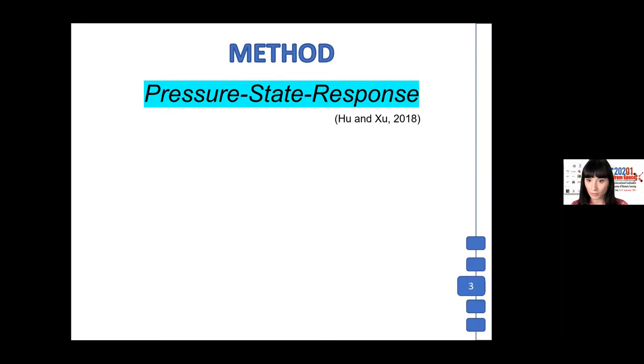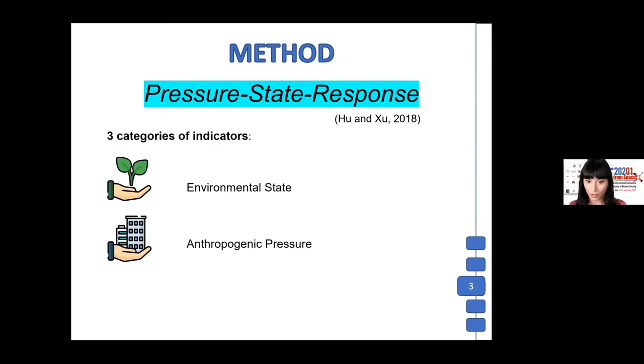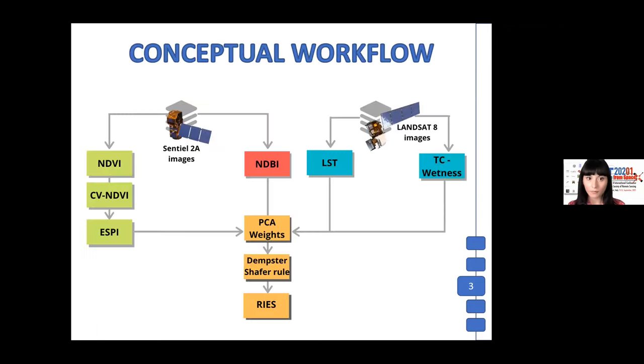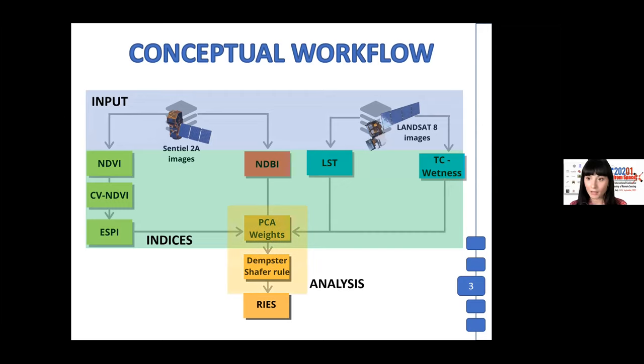The proposed method was derived from pressure-state-response framework elaborated by UNEP in 2018, and it involves the measurements of three categories of indicators: environmental state, anthropogenic pressure, and climatic response. In this slide we can see our conceptual workflow in which we have the remote sensing data as input. From these, we calculated four types of indices, and then these indices were weighted through a PCA analysis and aggregated using Dempster-Shafer rules to obtain, as a final result, the resilience index ecosystem services model.